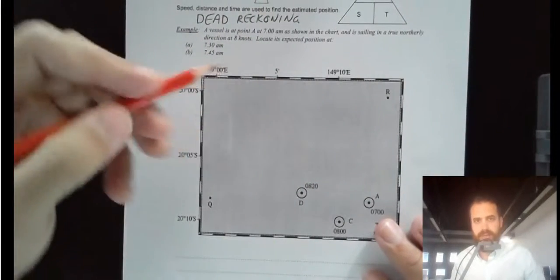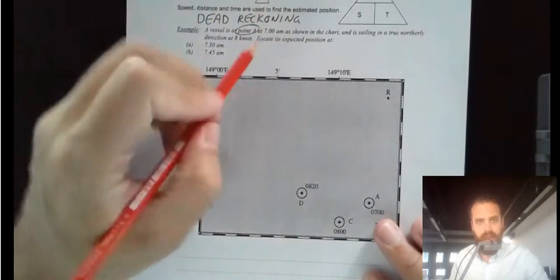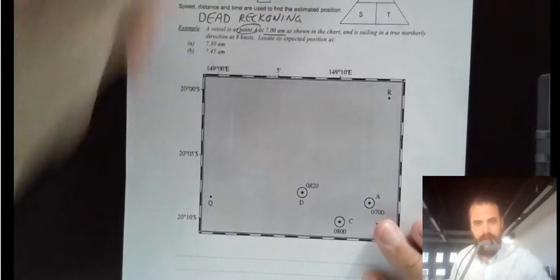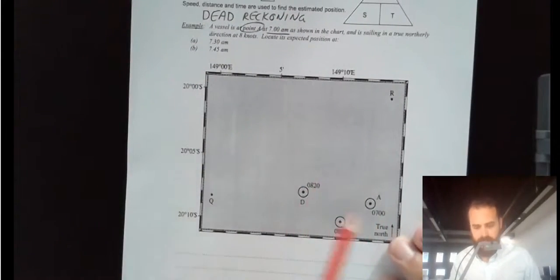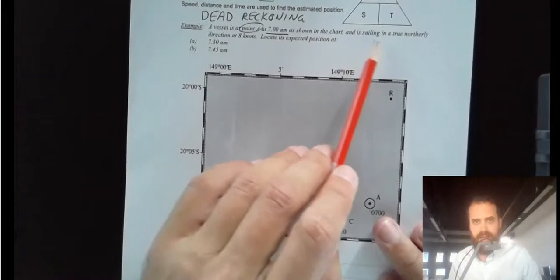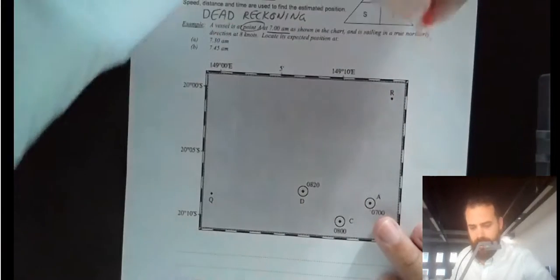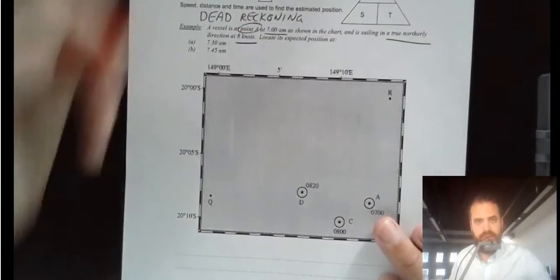So I'm going to go through a quick example here. A vessel is at point A at 7am, as shown in this chart. So there's point A, and that's at 7am. It's sailing at a true northerly direction at a speed of 8 knots. So it's going true north at 8 knots.